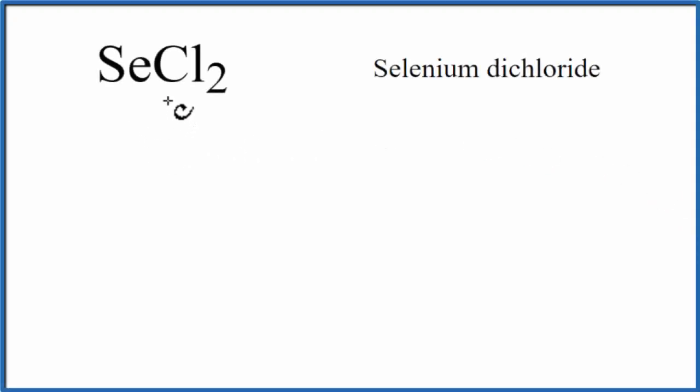To write the Lewis structure for SeCl2, selenium dichloride, let's count the valence electrons up.